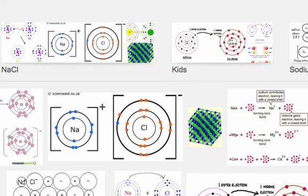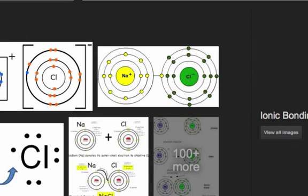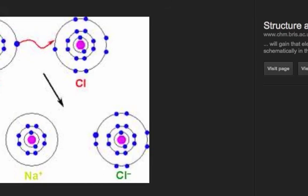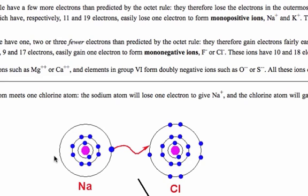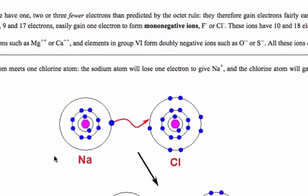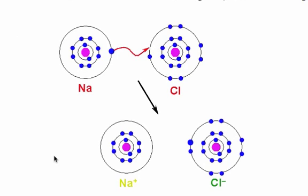If I just do a quick search for ionic bonding and click on any of these, you'll see the kind of pictures, the dot and cross diagrams that we drew at GCSE. And if I go to the page, you can see that we represent it with two atoms, a sodium atom, a chlorine atom.